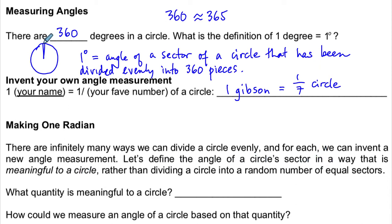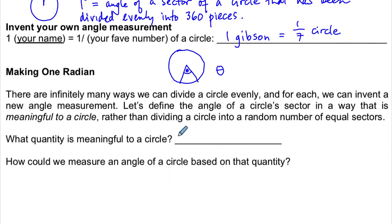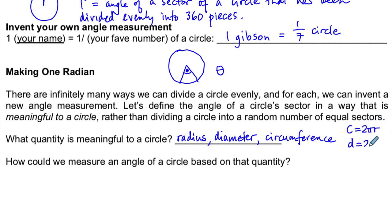Instead, we're going to define the angle of a circle's sector in a way that's meaningful to other properties of the circle. Think about quantities meaningful to a circle: the radius, the diameter, the circumference. The circumference is 2πr and the diameter is 2r — both depend on the radius. So the fundamental quantity about a circle is the radius. The question is: how could we measure the angle based on the radius? We're going to imagine taking a string of the radius length and wrapping it around the circle. We form one radian as the angle when the arc length and the radius of the circle are equal.